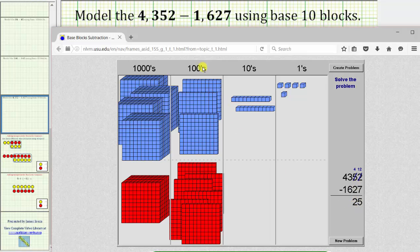Now I move to the hundreds place value, where we have the flats. We want to subtract or remove six flats from three flats, but we don't have enough blue flats. We need to perform an exchange.